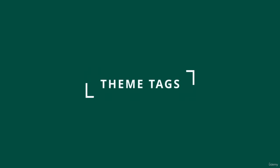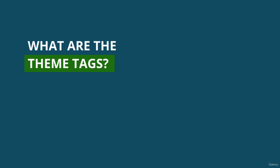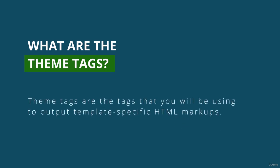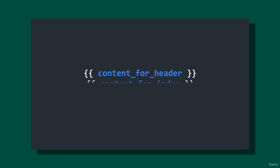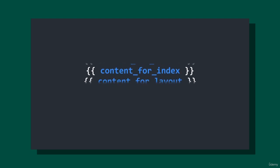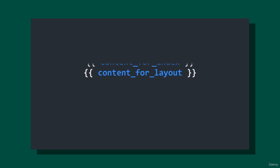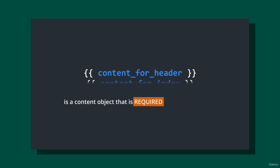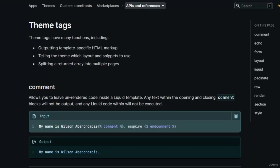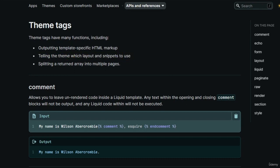In this lesson we will learn about theme tags. Theme tags are the tags that you will be using to output template-specific HTML markups. This is completely different from the content object covered in previous lessons. With theme tags you can specify what HTML markups to output, whereas with the content object you can't customize that. You can also use theme tags to tell the Shopify theme what layout and snippets to use.